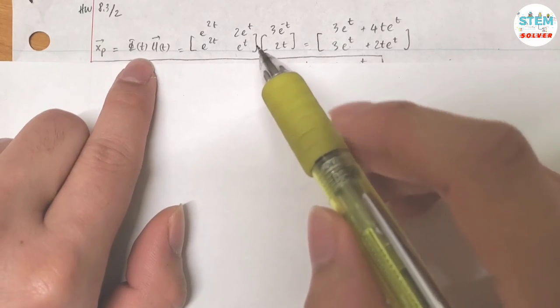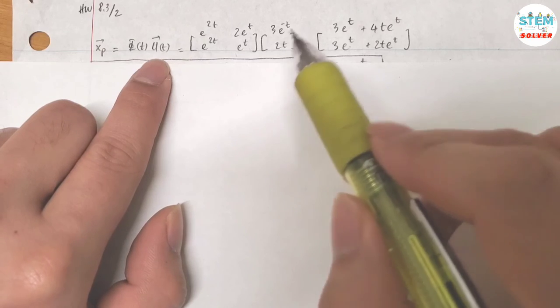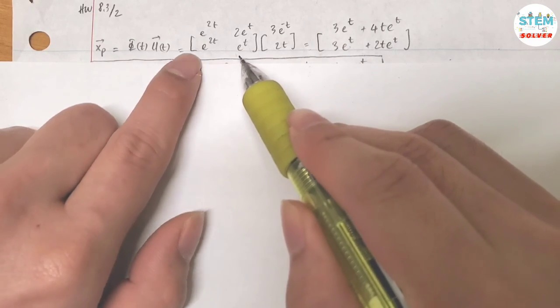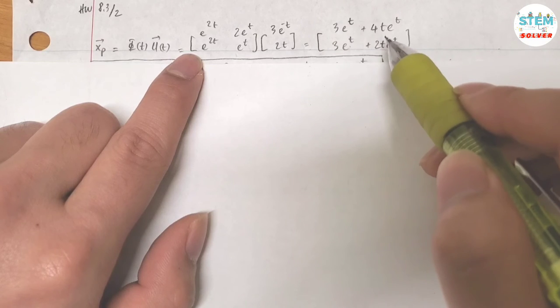You have non-homogeneous solution equals phi of t times u of t. Again, multiply matrices together—this is the correct order. Do not switch the order. Multiply matrices together, it gives you this.